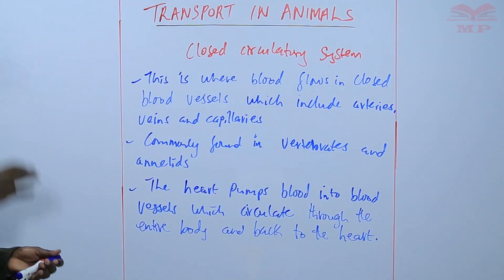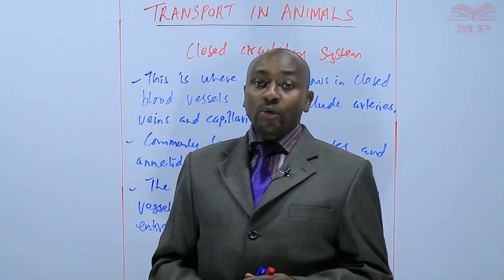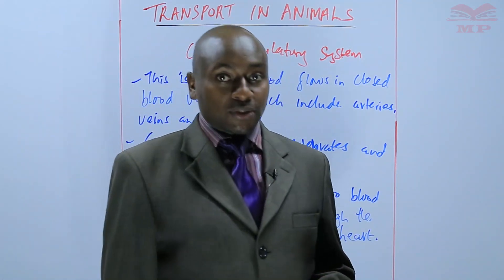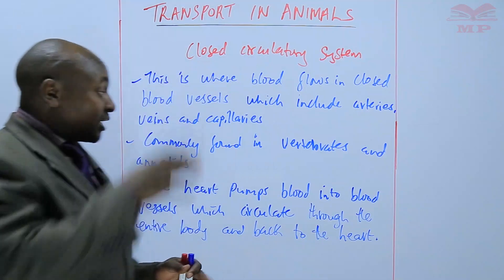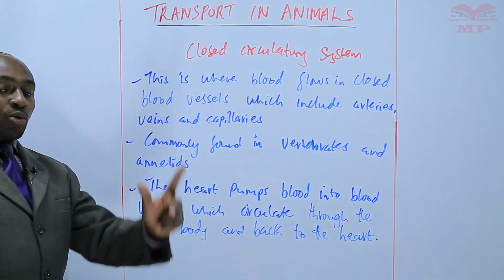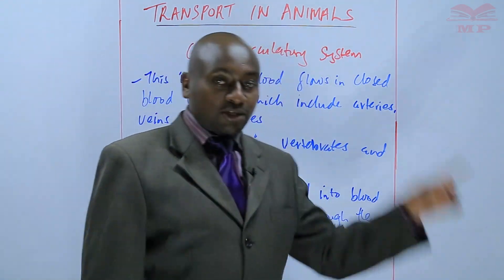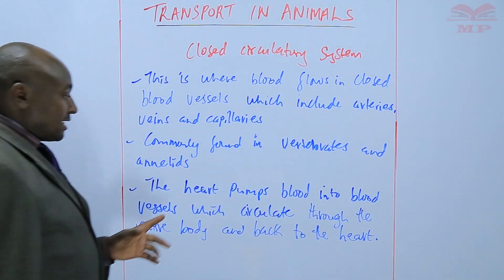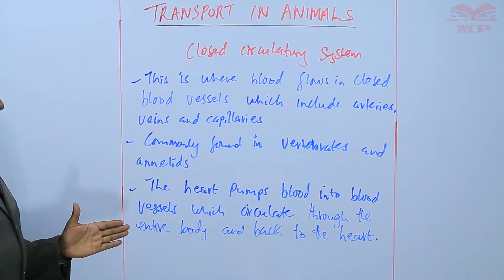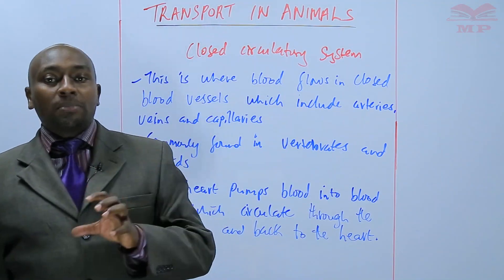In the closed circulatory system, we have two types of circulations: single circulation and double circulation. Single circulation is whereby blood flows through the heart once for every complete circulation. In some other animals, the blood goes through the heart twice for every complete circulation.